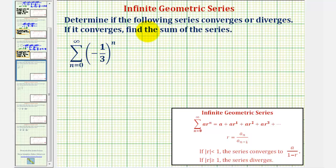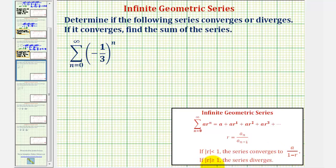We'll look at two examples of determining if alternating infinite geometric series converge or diverge. When we have an infinite geometric series, as long as the absolute value of r — where r is the common ratio — is less than one, the series converges and converges to a, the first term, divided by the quantity one minus r. And if the absolute value of r is greater than or equal to one, the series diverges.